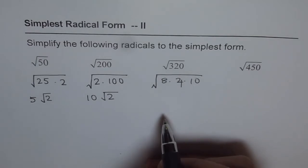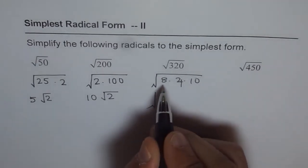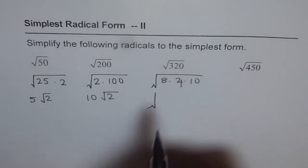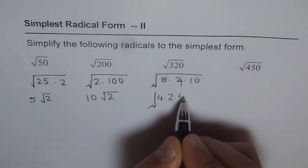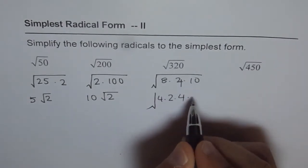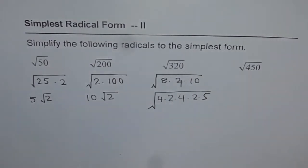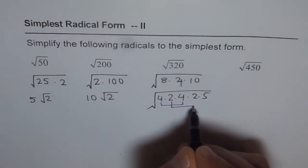Now, what to do in this situation? What we can do is we can further factorize each term. We know 8 is 4 times 2, so I can write 8 as 4 times 2. I already have 4 here. And 10 could be written as 2 times 5. So we got so many factors. Well, that helps. It helps since we have two 4s and two 2s under the square root.